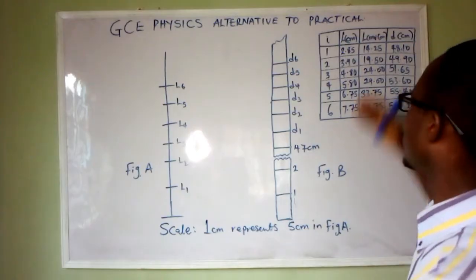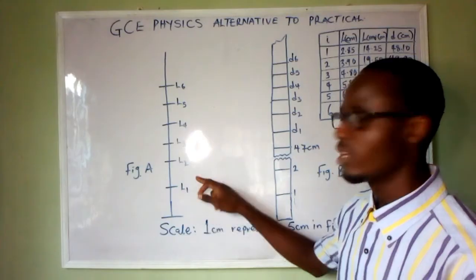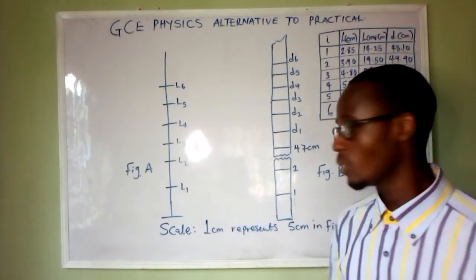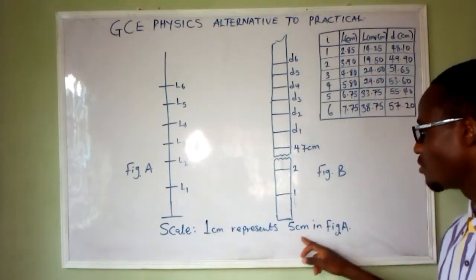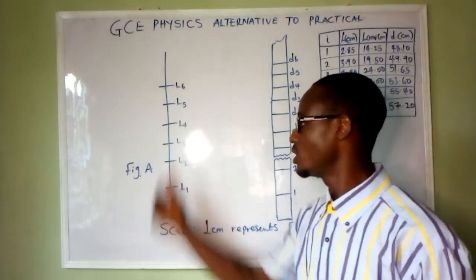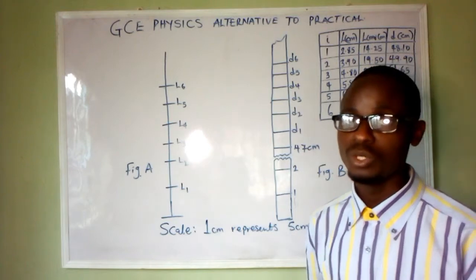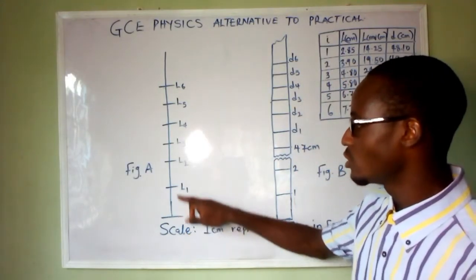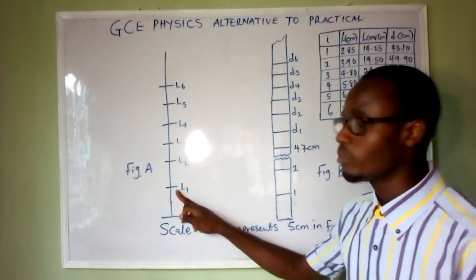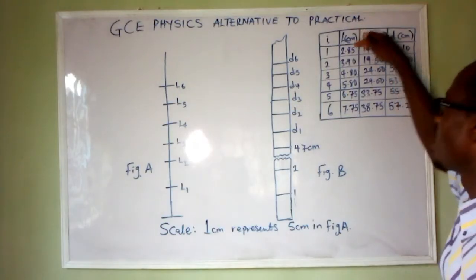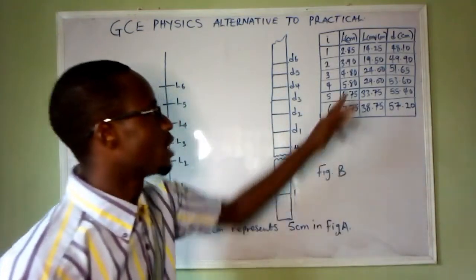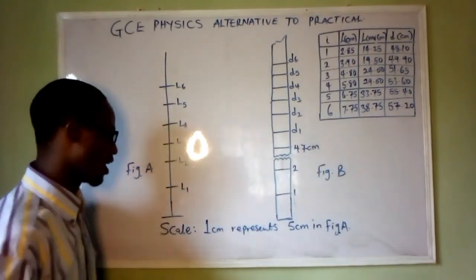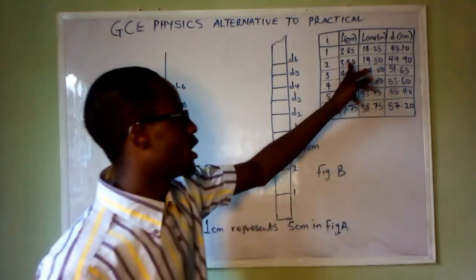To get each value of L, I measure using my ruler. Any one centimeter measured here represents five centimeters in the real experiment — that is the scale given: one centimeter represents five centimeters in the figure. So any value I measure on the diagram I multiply by five to convert it to the real value. After measuring from zero to L1 and multiplying by five, I got 14.25.